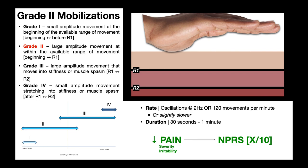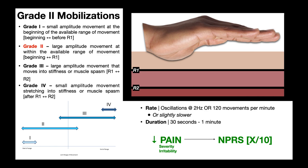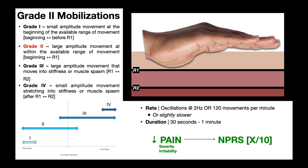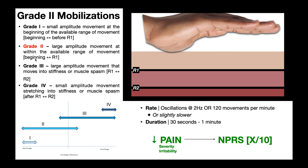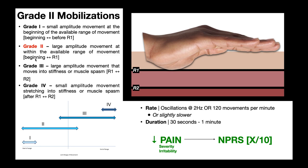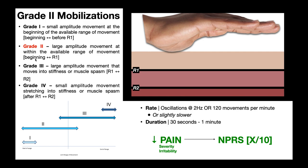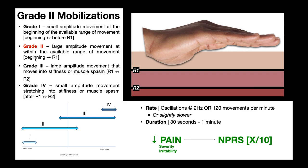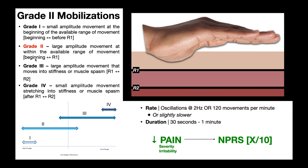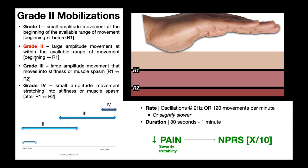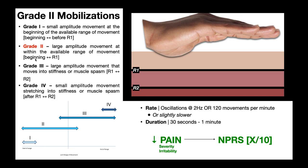Grade two mobilizations are similar to grade one, except they're large amplitude movements that go all the way to R1. R1 is the point where we've taken up all the slack in the soft tissue. We start at the beginning — right at the skin surface — but it's large amplitude in the sense that instead of stopping prior to R1, we're going all the way from the skin surface down to R1, where we feel that first tissue resistance. Generally speaking with grade twos, we're not pushing any further beyond the point where we've taken up all the slack.